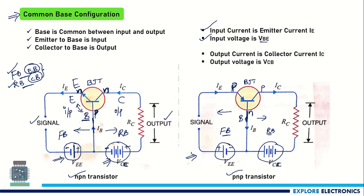Now, the input current is IE and the input voltage is VBE. On the output side, in both circuits, the output current is the collector current IC, because the collector terminal is the output terminal. The output voltage is the voltage between the collector and the base, VCB, which becomes the output voltage.